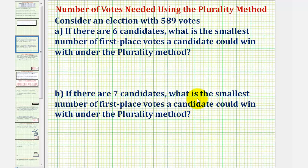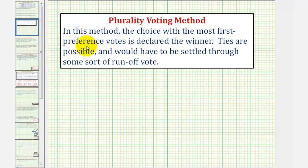Welcome to two examples of determining the smallest number of votes needed to win under the plurality method. For a quick review, when using the plurality voting method, the choice with the most first preference votes is declared the winner. Ties are possible and would have to be settled through some sort of runoff. We don't want to confuse this with the majority, where a majority is more than half, or more than fifty percent of the votes.